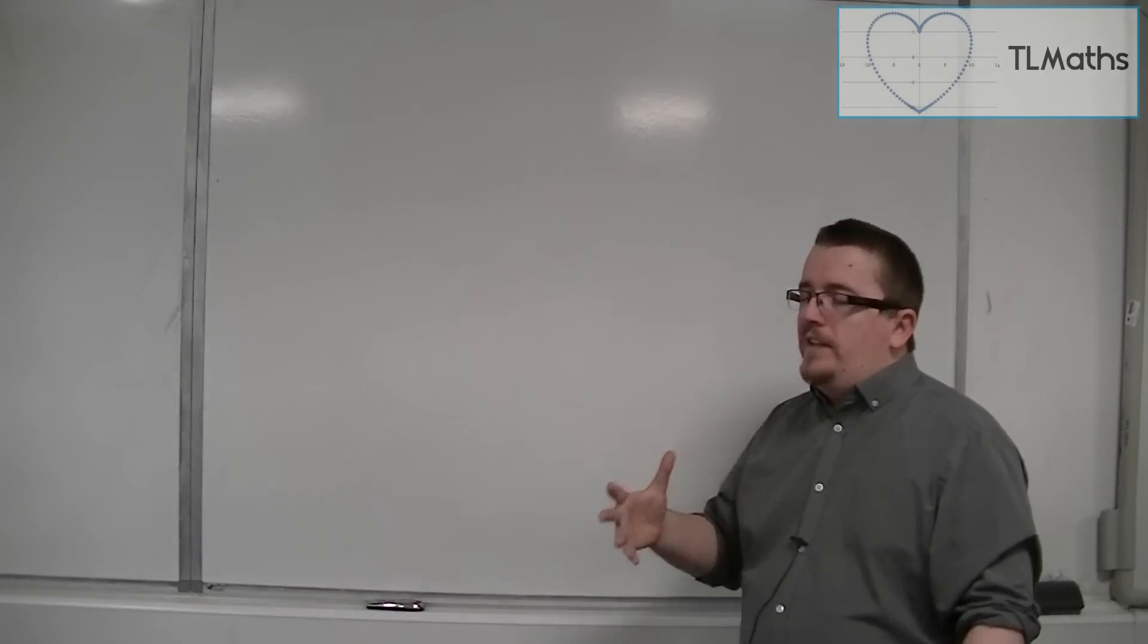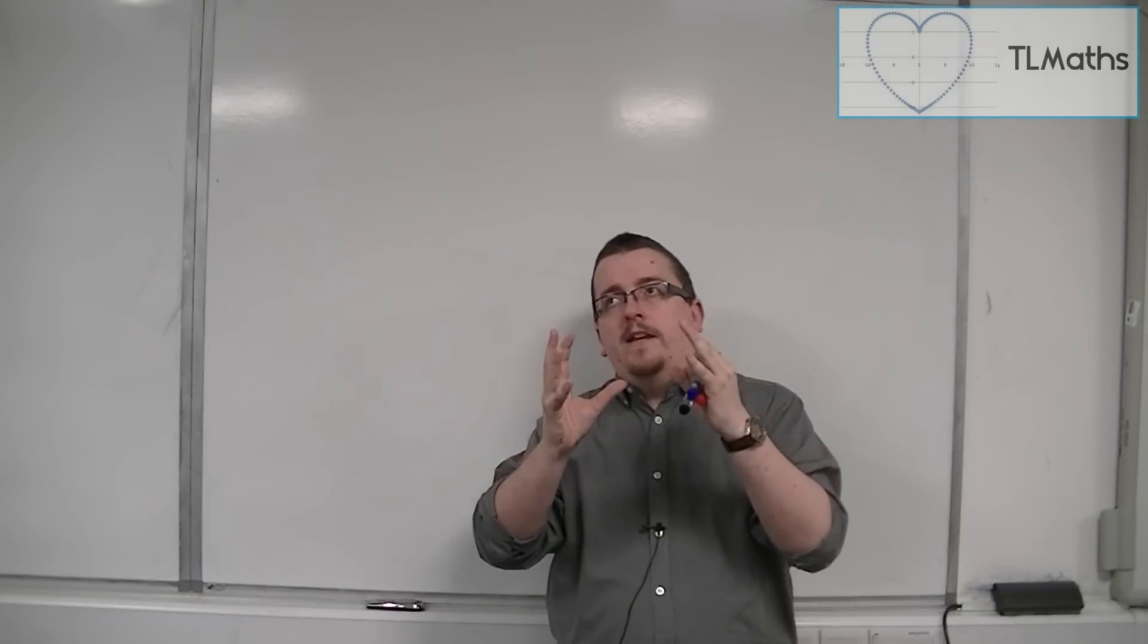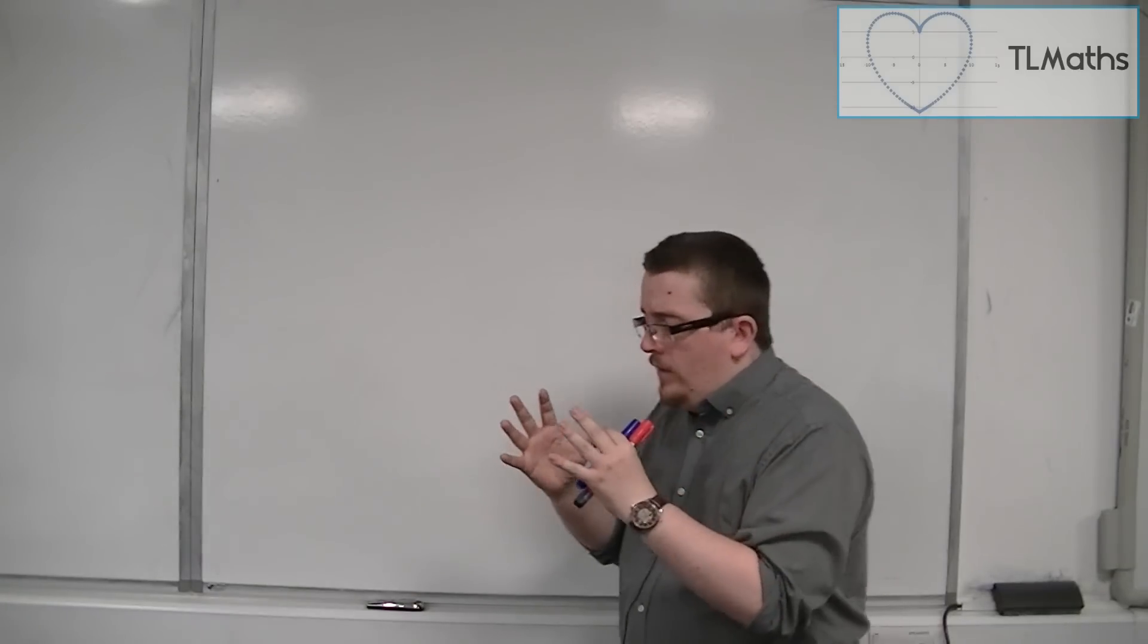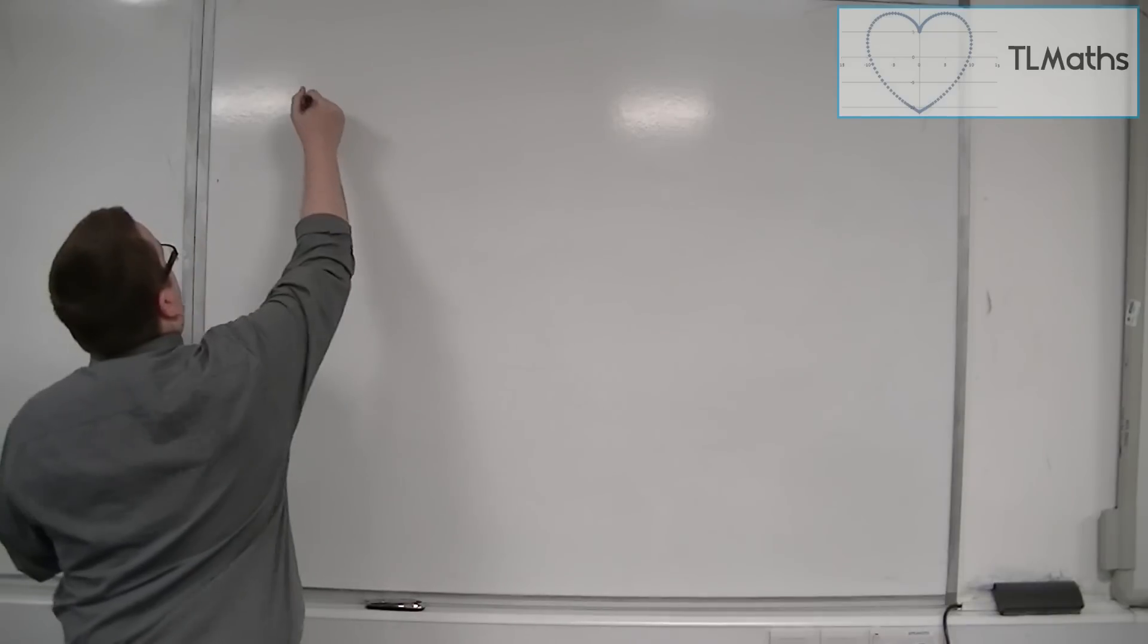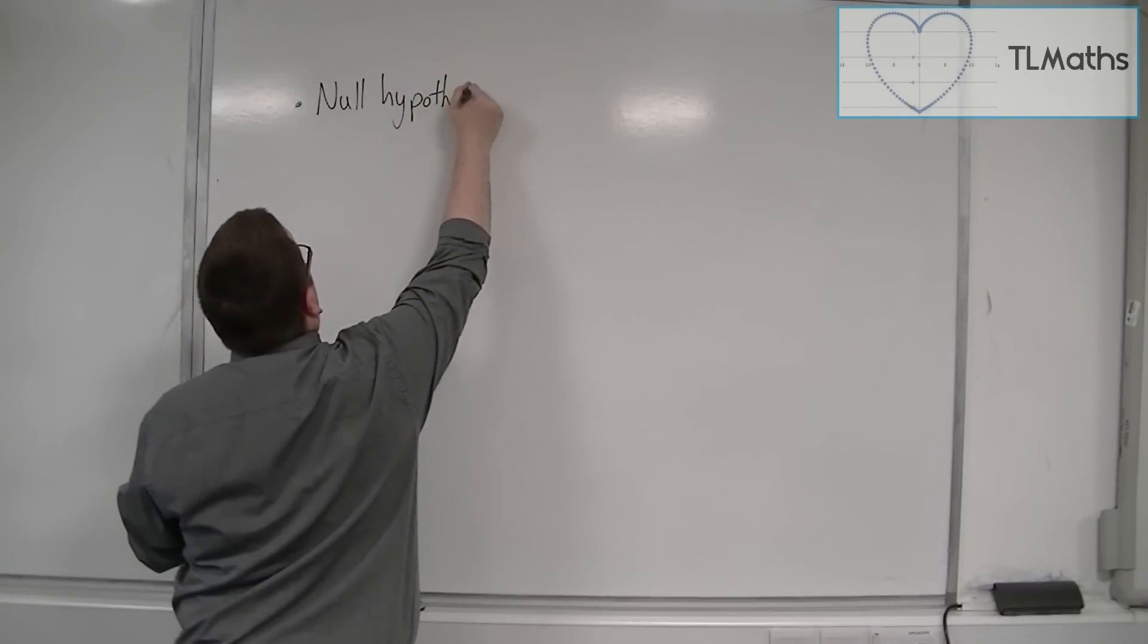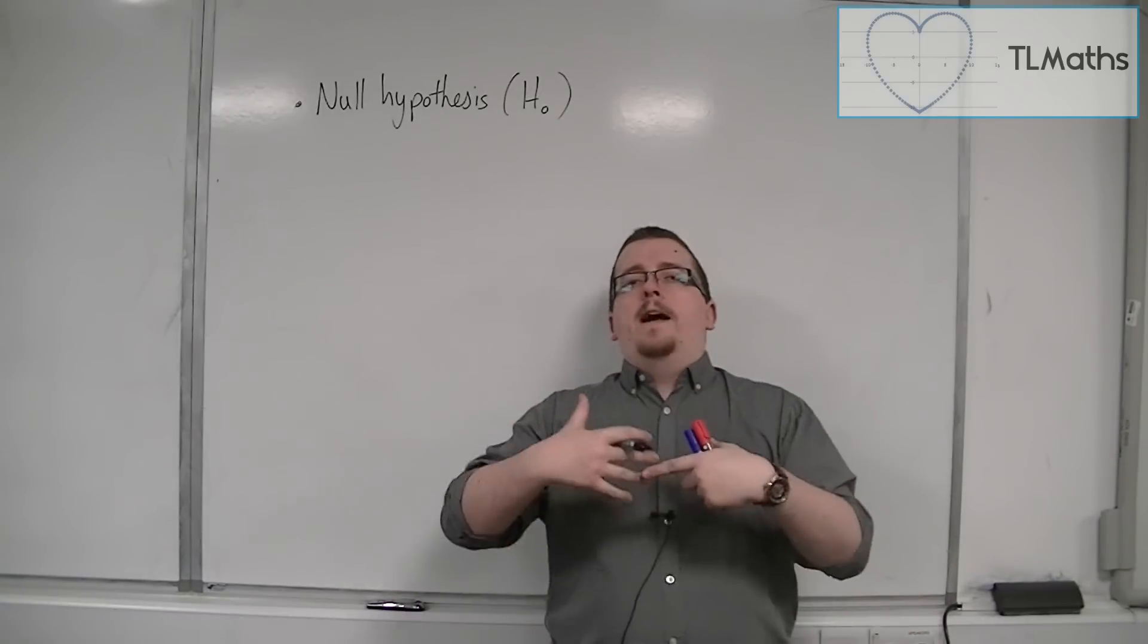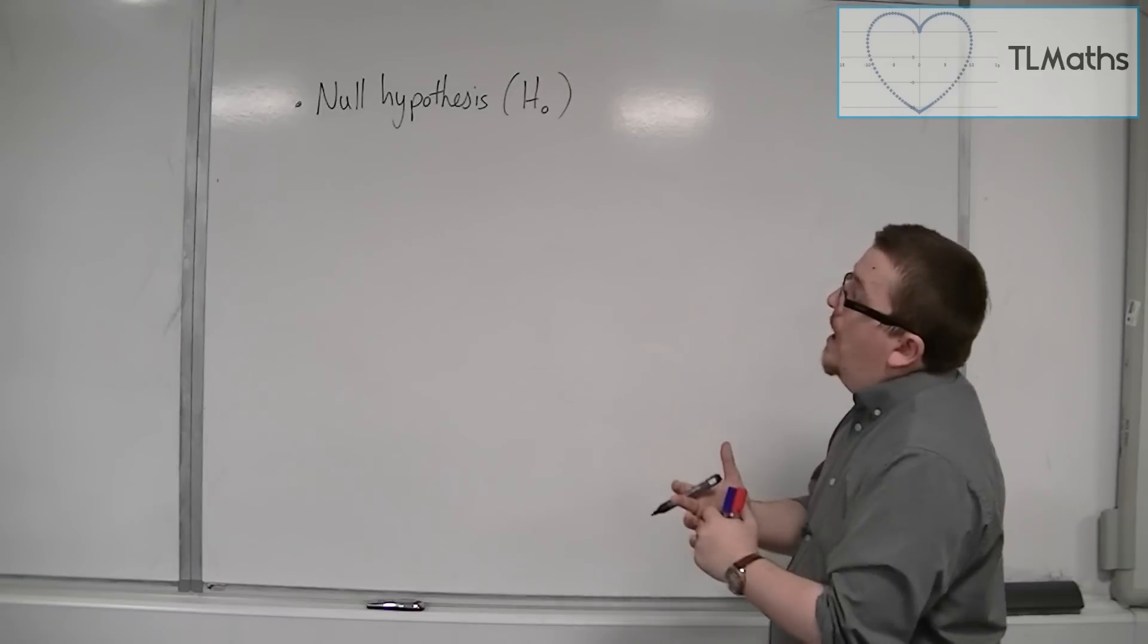So the first thing that we need to do is to think, essentially, someone's going to come along with the devil's advocate position that the coin, in this case, is fair. So we have what we refer to as a null hypothesis. The null hypothesis is often written as H0 or H-naught, and as I said, this is the devil's advocate position. So we think that the coin is fair - that would be the null hypothesis.